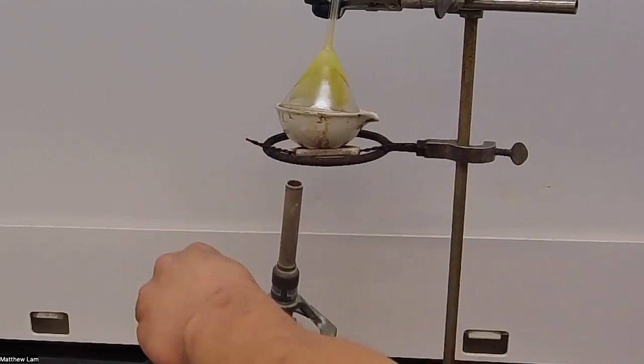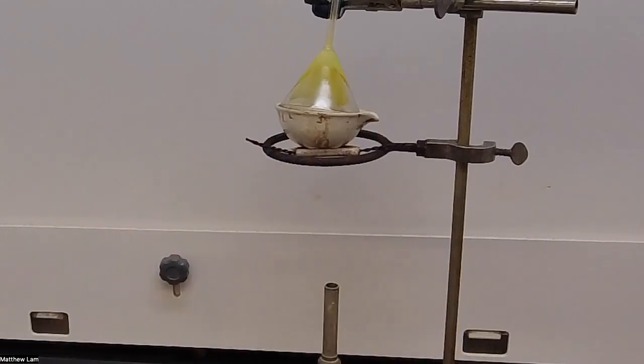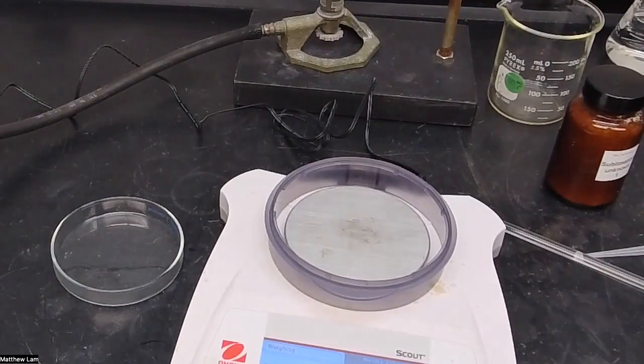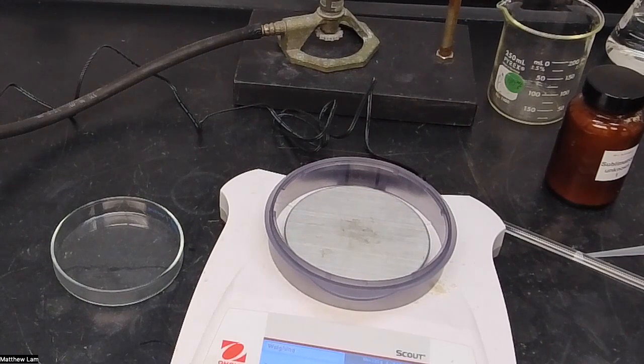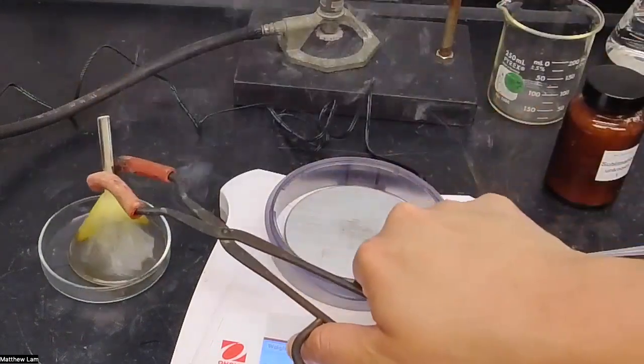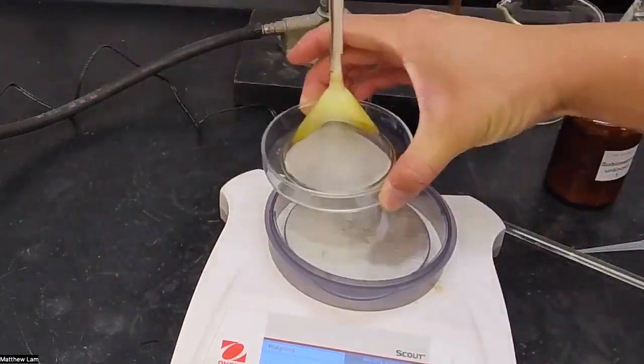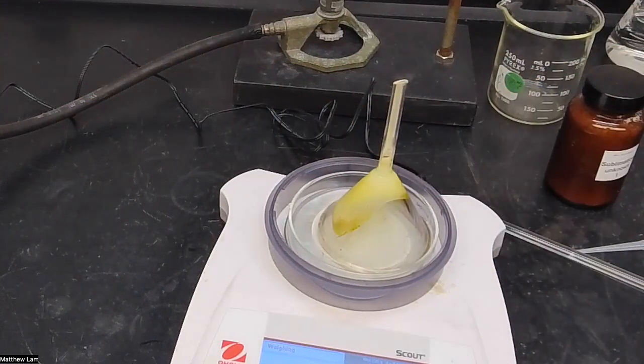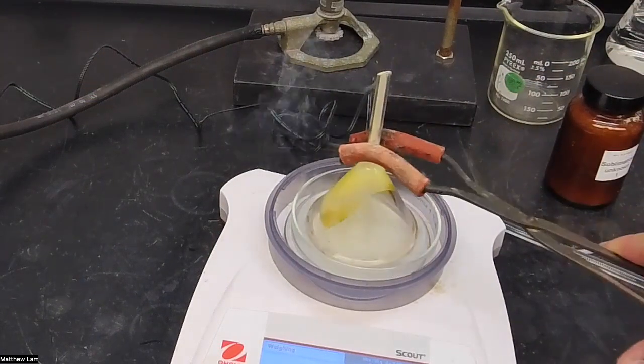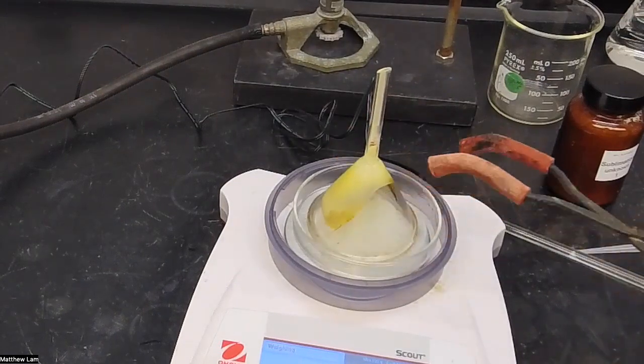Again, we will grab our balance. We will put our funnel onto our petri dish. I'm going to carefully take that off. Place that funnel on the petri dish. It is still steaming. And then we're going to take the mass, or the weight of the funnel, the petri dish, and the sublime ammonium chloride. There's still a bunch of ammonium chloride in there, as you can see.